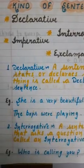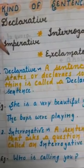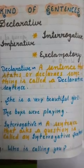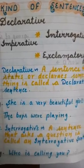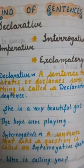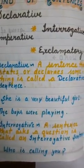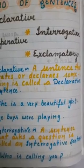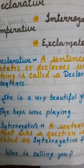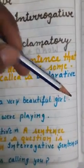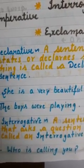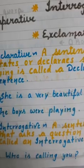First, let us understand what a declarative sentence is. A sentence that states or declares something is called a declarative sentence. Simple sentences that make normal statements are called declarative sentences. For example: 'She is a very beautiful girl.' A sentence always ends with a full stop. 'The boys were playing' — this is a simple declarative sentence just telling us a fact.